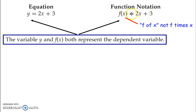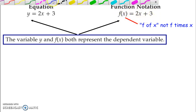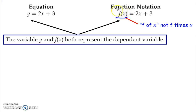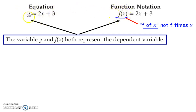f of x equals mx plus b, or 2x plus 3. Note here that this is not f times x, it's f of x. Both y and f of x are the dependent variables. So f of x is another way to write y for the function — the dependent variable.